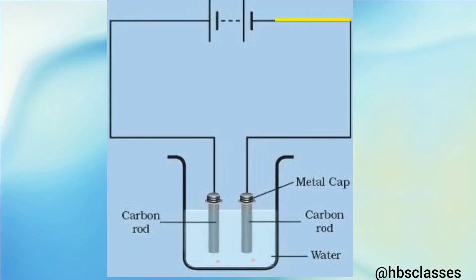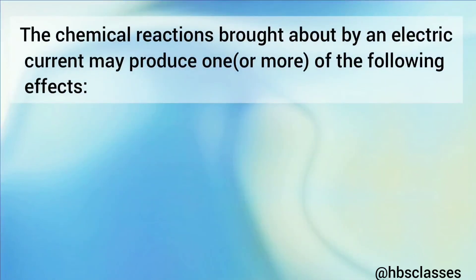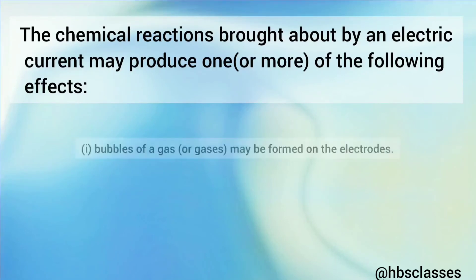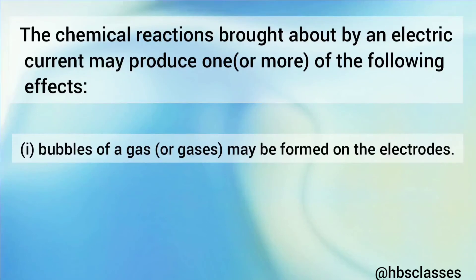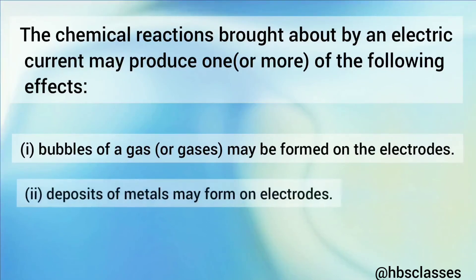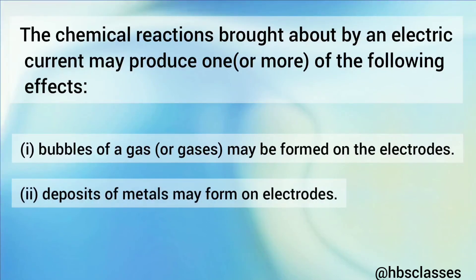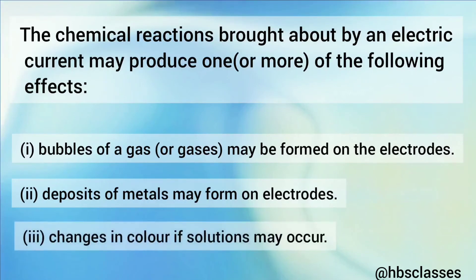The chemical reactions brought about by an electric current can produce one or more of the following effects: bubbles of a gas may be formed on the electrodes, deposits of metal may form on electrodes, or changes in the color of the solution may occur. These are some of the chemical effects of electric current.